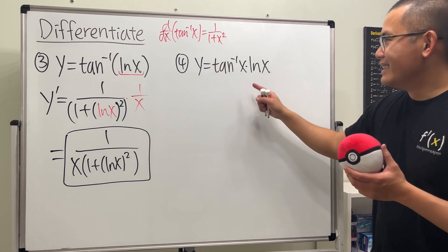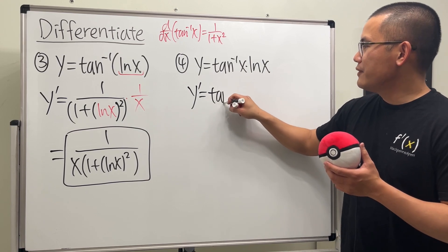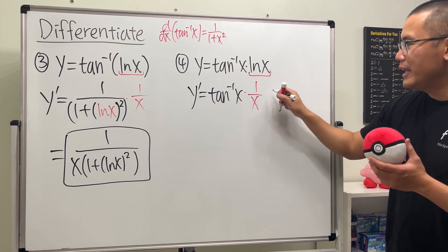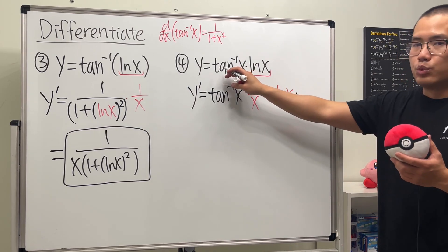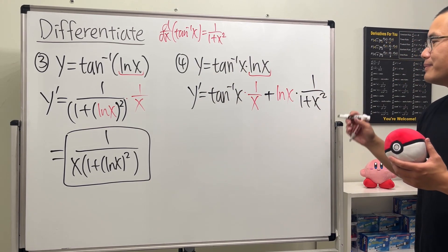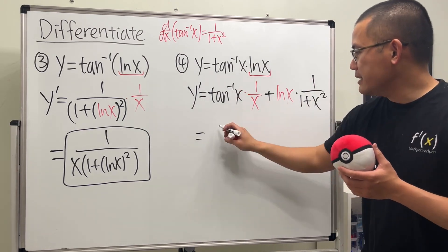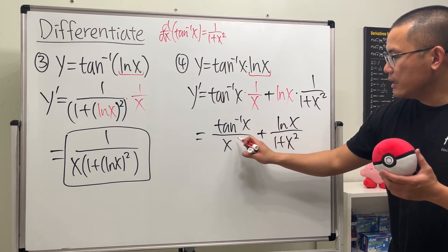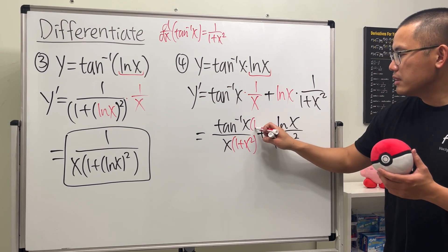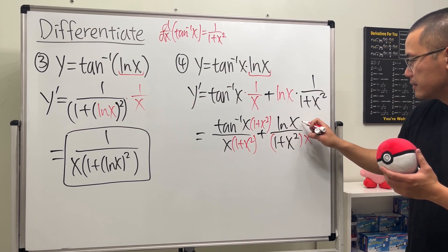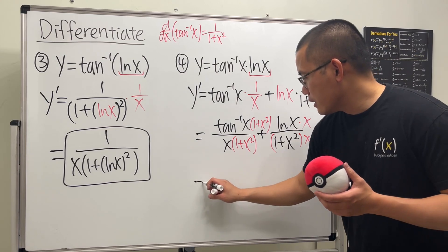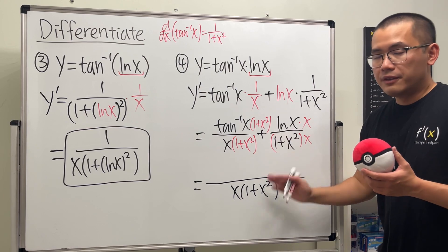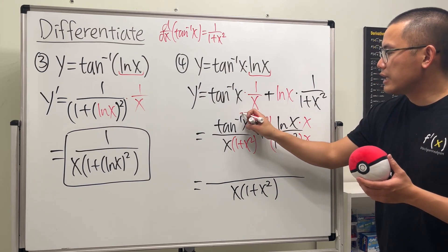For problem 4, using the product rule: y prime equals the first function arctan(x) times the derivative of the second, which is 1 over x, plus the second function ln(x) times the derivative of the first, which is 1 over (1 + x²). To combine these fractions, multiply the first term by (1 + x²) and the second term by x so they share the denominator x·(1 + x²).